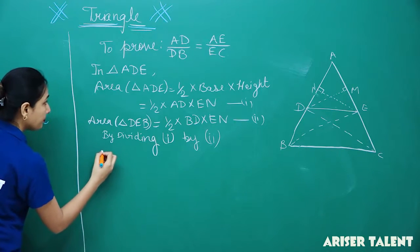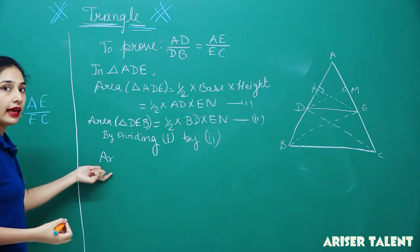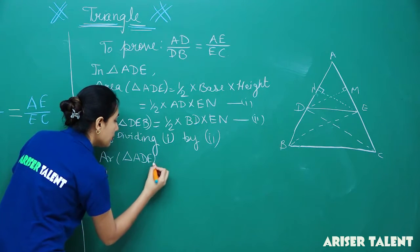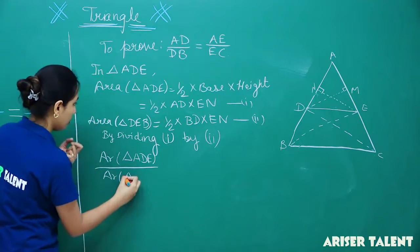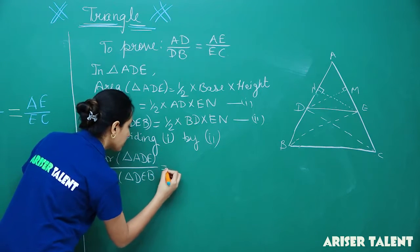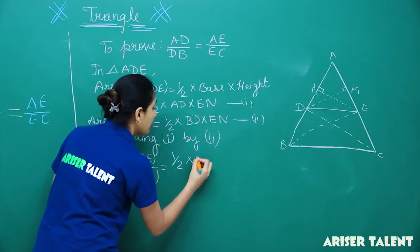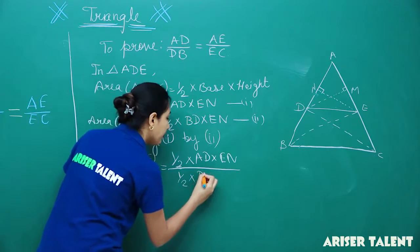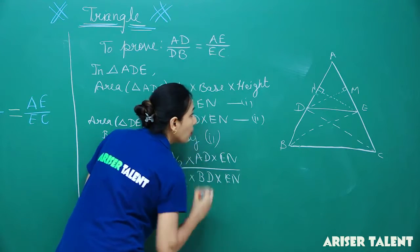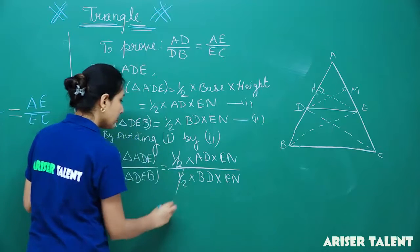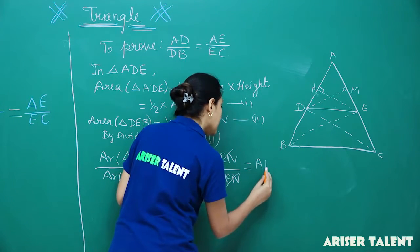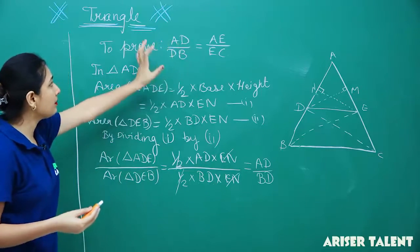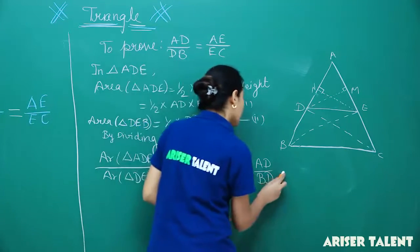What will you get? Area of triangle ADE divided by area of triangle DEB equals half multiplied by AD multiplied by EN, divided by half multiplied by BD multiplied by EN. You can cancel the halves and EN, so you will get AD divided by BD. We are getting results something like what we have to prove, so name this equation 3.